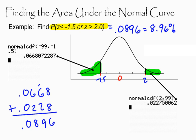So there's just another example of finding the area under the normal curve with a different type of notation, probability notation.